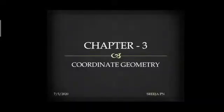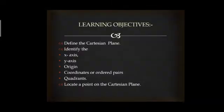These latitudes and longitudes form the axis used in coordinate geometry. Let us learn in detail about the lesson: Coordinate Geometry, Chapter 3. After learning this lesson, a student will be able to define the Cartesian plane, identify the x-axis, the y-axis, origin, coordinates or ordered pairs, quadrants, and to locate a point on the Cartesian plane.